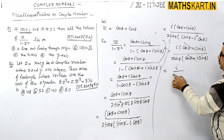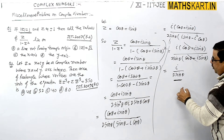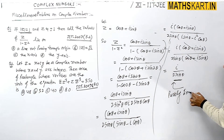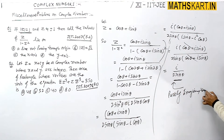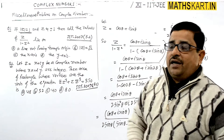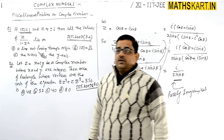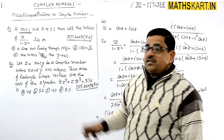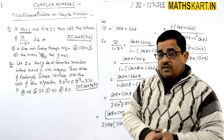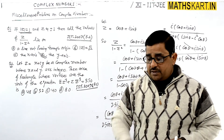So ultimately the result is i upon 2sinθ, which is a purely imaginary value. Since it is a purely imaginary number, it will definitely lie on the y-axis. So option D is correct. We can say that z upon 1 minus z squared lies on the y-axis because it is a purely imaginary number.